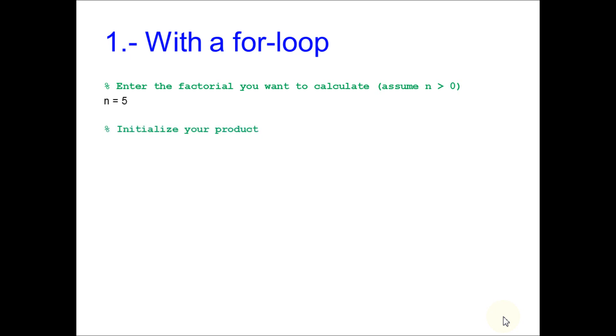First, you have to initialize your product. In this case, our product will be in variable F1. You can go from 1 to your desired value in steps of 1. This line starts the iteration and goes from 1 to n.